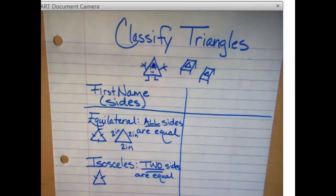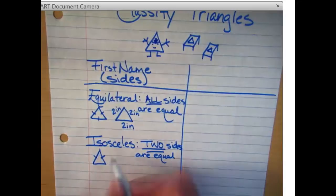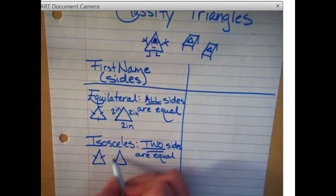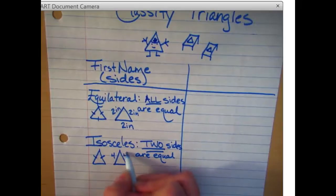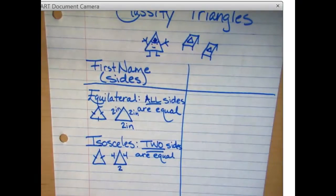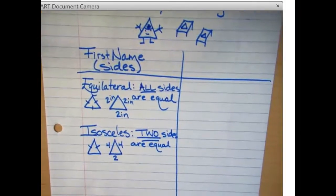And this one's another unknown length. Sometimes they'll give you the lengths on the side. And this will be four, and this will be four, and this will be two. As long as two sides are equal, his name is Isosceles.